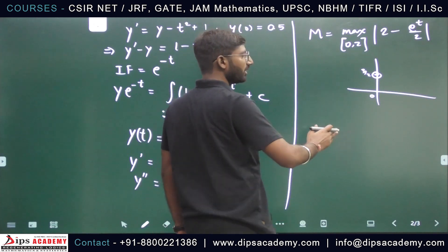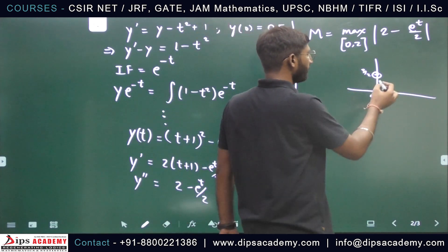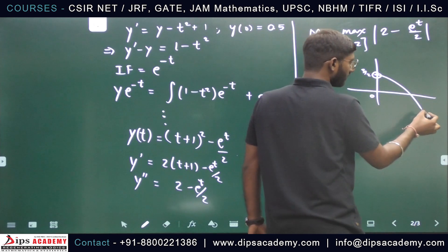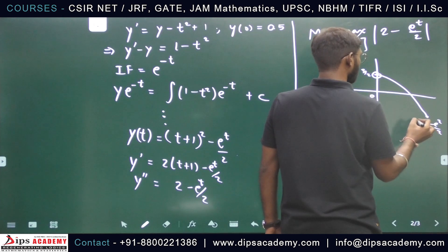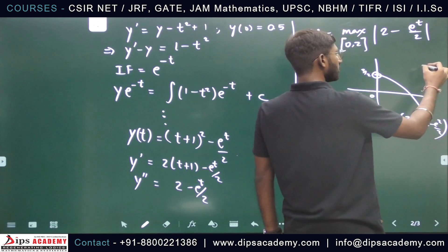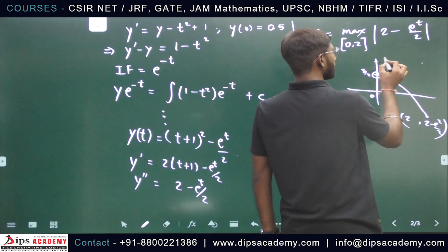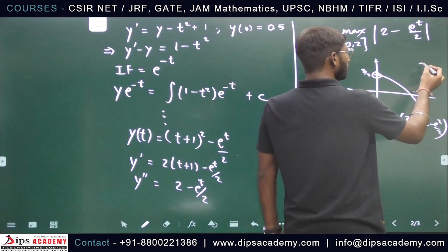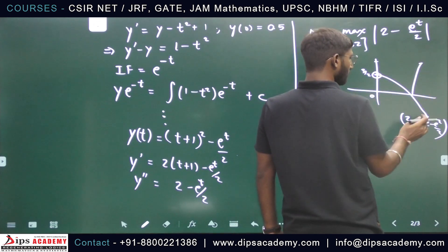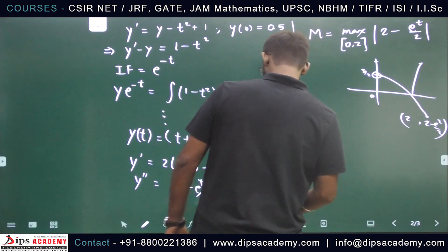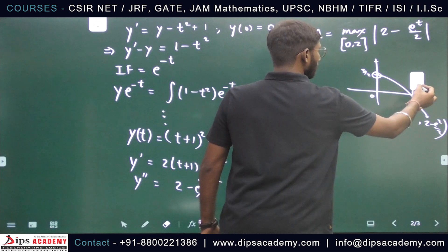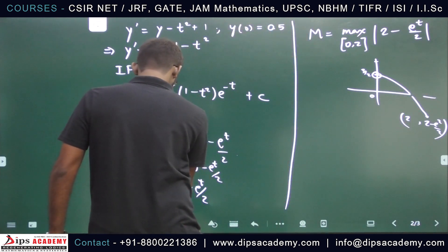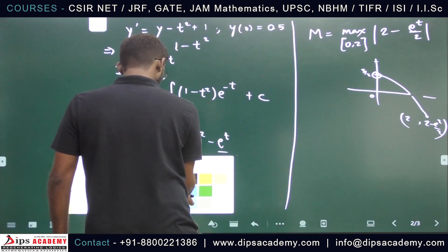2 minus e squared by 2, 3 by 2. So if I talk about this, then the graph will change. Because you talk about the graph, then this graph will appear with modulus, and the maximum value will appear at point 2.